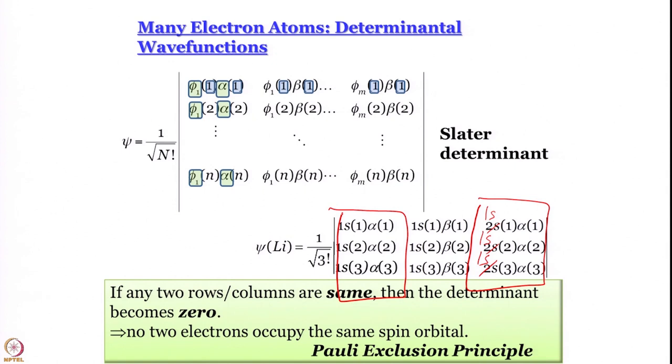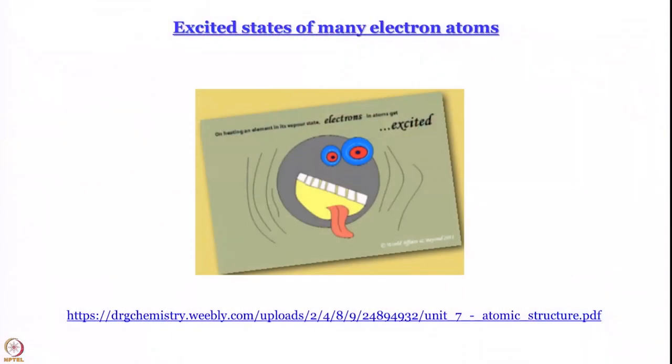We have learned the Slater determinant and how to express the wave function of the ground state of helium and lithium using Slater determinants. In the next module, we want to see whether we can extend this discussion to excited states of these atoms.